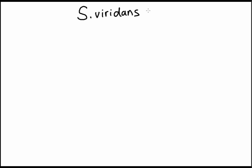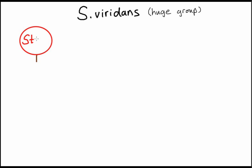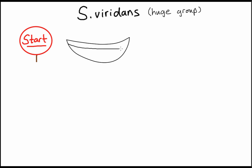Strep viridans is actually a huge group of bacteria with many species within it. When talking about any disease, I like to have a starting point in the body — somewhere I can imagine all the disease coming from — and then it spreads throughout the body from that starting point. This will help us remember all the diseases that Strep viridans causes.